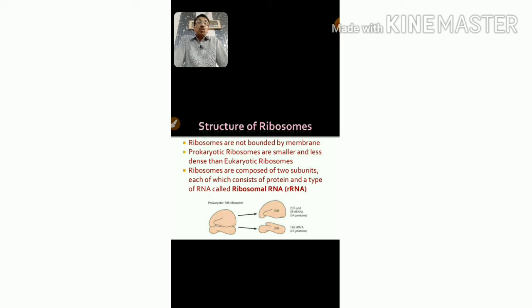When we measure ribosomes, we generally find that they are composed of two subunits, each consisting of protein and a type of RNA. The RNA present on the ribosome is called ribosomal RNA.